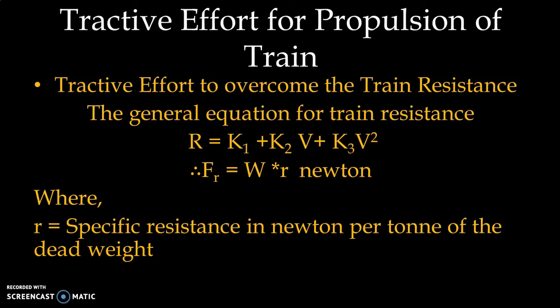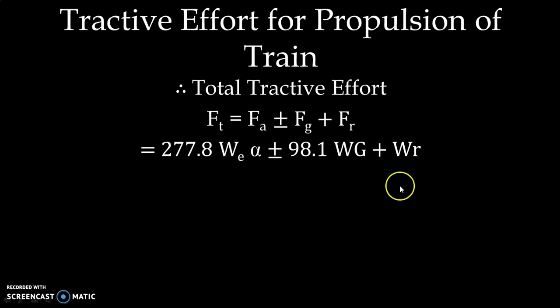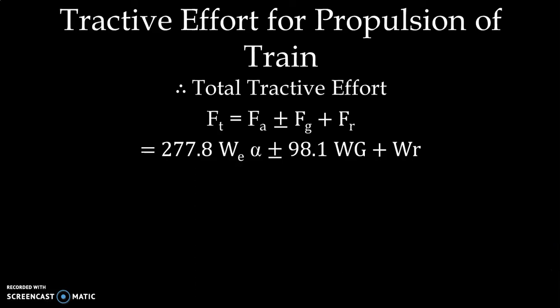We have now derived the expressions for all three components of tractive effort. The total tractive effort is Ft = Fa ± Fg + Fr, and substituting all individual expressions it becomes: Ft = 277.8 × We × alpha ± 98.1 × W × G + W × r. The plus sign is used for up gradient and minus sign for down gradient. This is the complete expression for total tractive effort Ft. Thank you for watching.